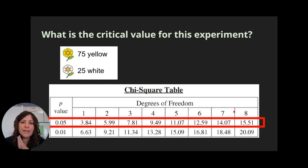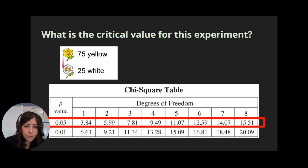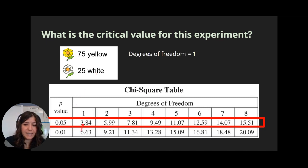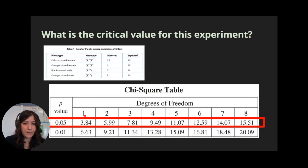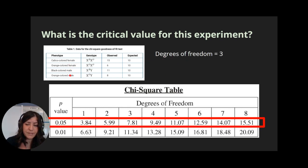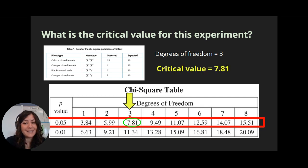Now let's put it all together. What would be the critical value for this experiment? We're going to use p equals 0.05, and in this experiment we have two phenotypes, which means our degrees of freedom is two minus one, equals one. So our critical value would be 3.84, which is the intersection of those two in the table. For another example with three degrees of freedom — because we had four phenotypes — using the p equals 0.05 row, our critical value would be 7.81.